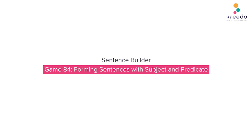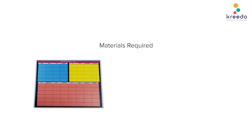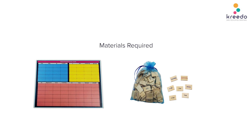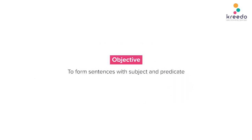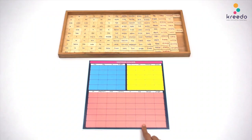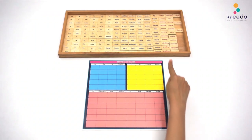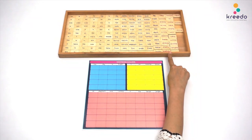Sentence Builder Game 84: Forming Sentences with Subject and Predicate. Materials required: Sentence Builder Chart, Bird Tiles, Tray. Objective: To form sentences with subject and predicate. Procedure: Place the Sentence Builder Chart and the tray with all the word tiles in front of the child.